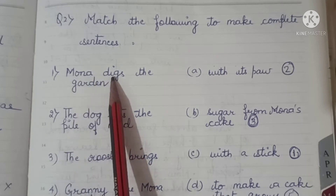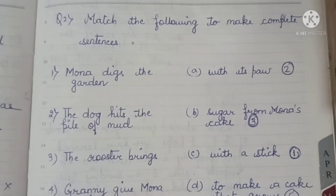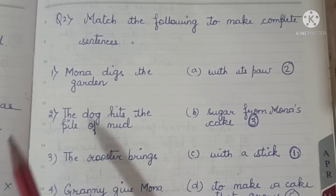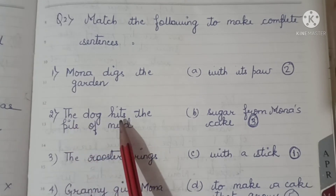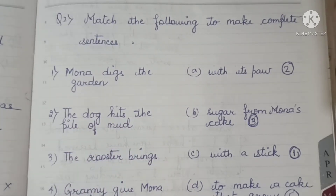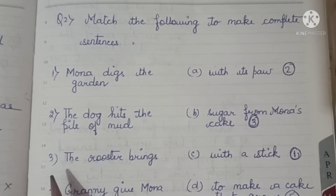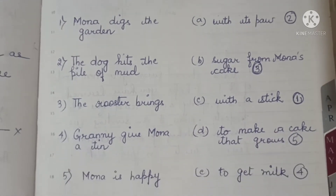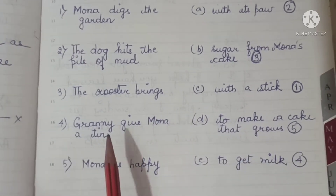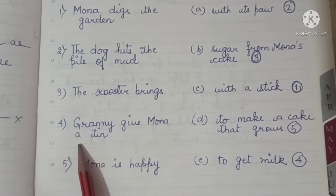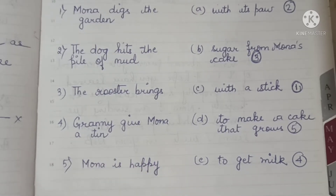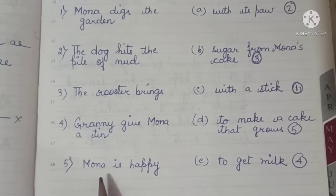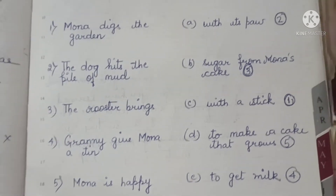Sentence number 1: Mona digs the garden — means Mona garden dig kar rahi thi. Number 2: the dog hits the pile of mud — dog ne jo mitti ka dheer tha ushe hit kiya. Number 3: the rooster brings — rooster lekar aya. Number 4: granny gave Mona a tin — granny ne Mona ko ek tin ka box diya. Number 5: Mona is happy — Mona bohat khush thi.